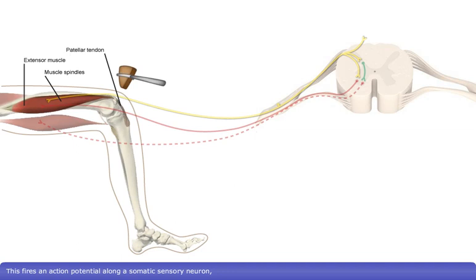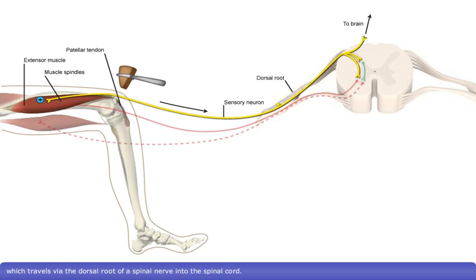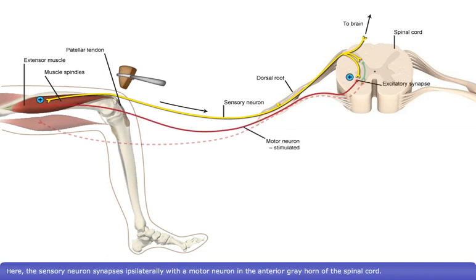This fires an action potential along a somatic sensory neuron, which travels via the dorsal root of a spinal nerve into the spinal cord. Here, the sensory neuron synapses ipsilaterally with a motor neuron in the anterior grey horn of the spinal cord.